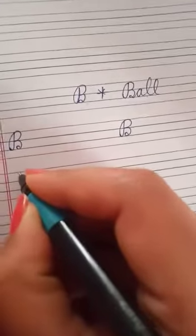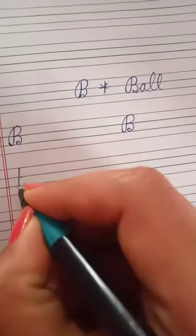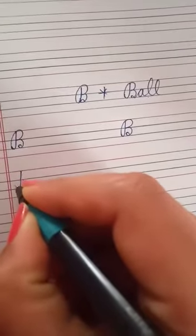Now firstly, see how to make B. Start from the first line. Firstly, make a standing line and turn this side.